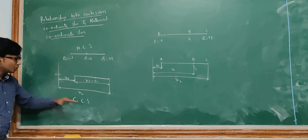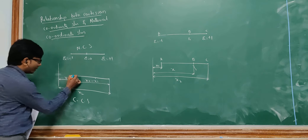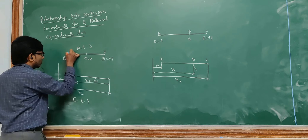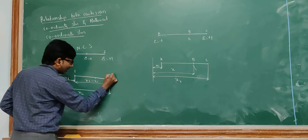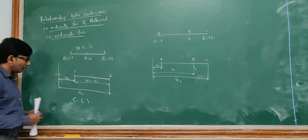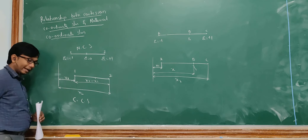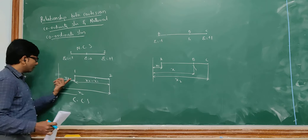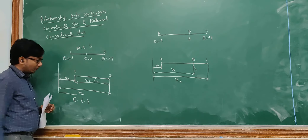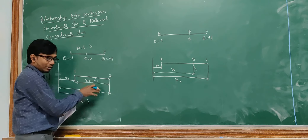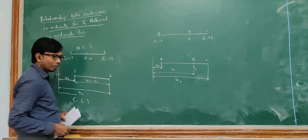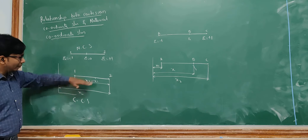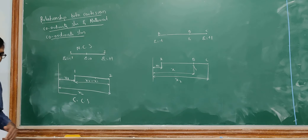Coming to the Cartesian coordinate system, this is the same element with two nodes — first node and second node. The first node is given by the dimension x1 with a fixed coordinate system. From this coordinate axis it is x1 here and this point is x2. If I want to know the length of this element, it will be x2 minus x1.